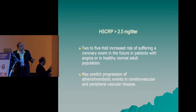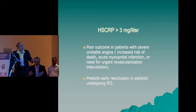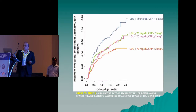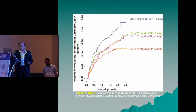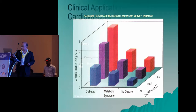HSCRP of more than 2.5 mg increases the risk 2 to 5-fold in patients with angina or healthy normal adults, and can even predict progression of cerebrovascular and peripheral vascular disease. More than 3 mg can predict acute myocardial infarction in patients with unstable angina and can predict reocclusion after angioplasty. This predictive role is additive and beyond conventional risk factors — HSCRP is more predictive than total cholesterol, LDL, or total cholesterol-HDL ratio, and is useful in patients with both normal and high LDL, as well as in diabetic metabolic syndrome.